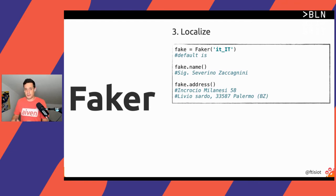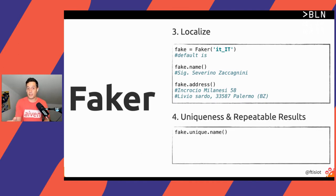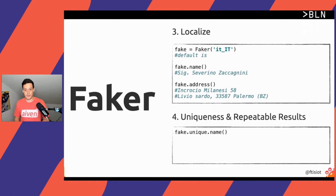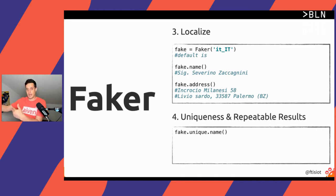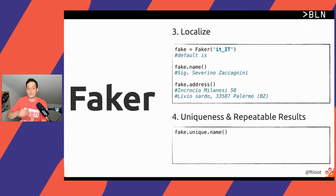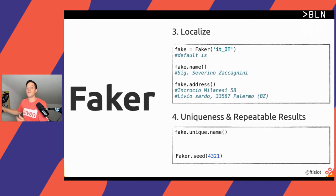Faker also has methods to control its behavior. For example, if I want always different names, I just prefix the name function with 'unique'. This will make Faker create a different name every time you invoke the same function. On the other side, if I want to use fake data to test my platform and always provide the same input dataset, I can obtain repeatable results with Faker by fixing the seed of the randomizer — Faker will generate the same output every time I re-execute the same code.